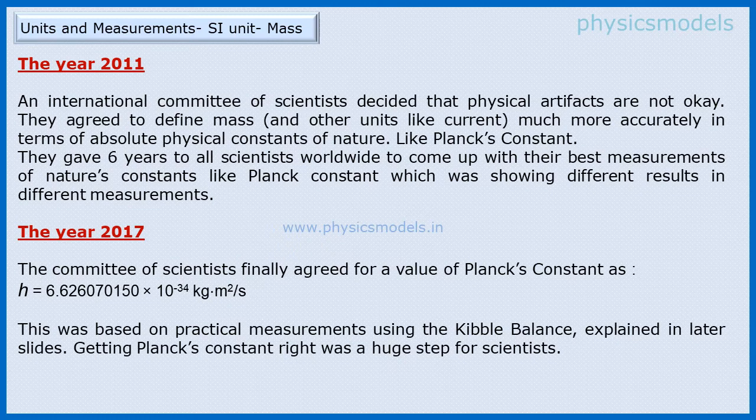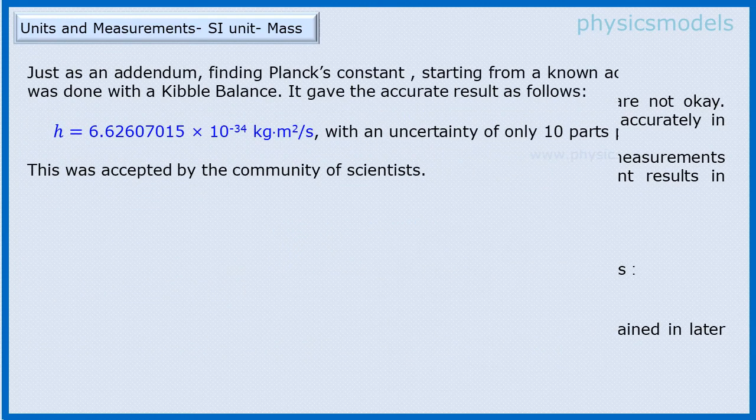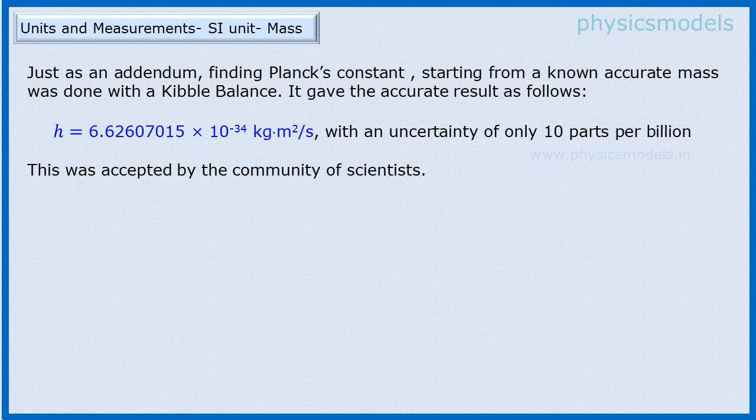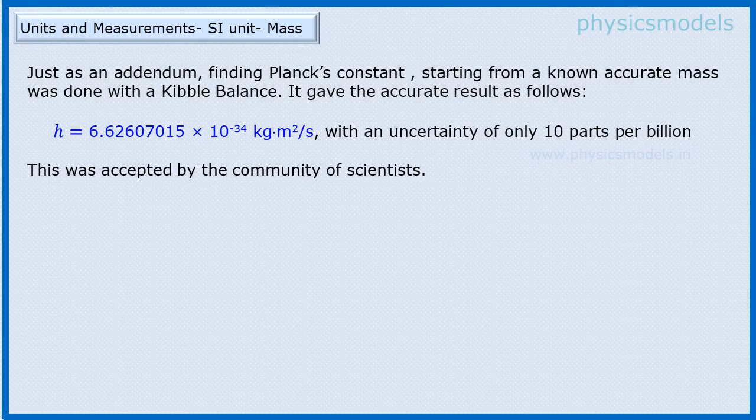Before getting into the detail of what is Planck's constant, I wanted to mention that the accurate value of Planck's constant itself was found using the Kibble balance by putting in a known mass of very accurate value. The Kibble balance is such that if you put in an accurate mass of known value, you can get an accurate value of Planck's constant. So collecting everybody's results, scientists decided on one value of Planck's constant.